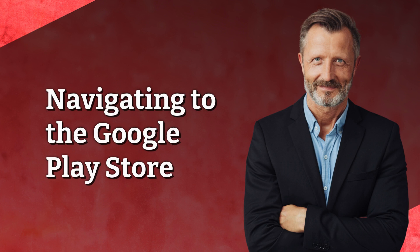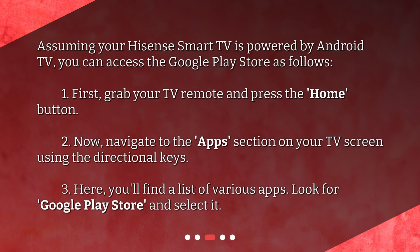Navigating to the Google Play Store. Assuming your Hisense Smart TV is powered by Android TV, you can access the Google Play Store as follows. First, grab your TV remote and press the Home button. Now, navigate to the Apps section on your TV screen using the directional keys. Here, you'll find a list of various apps. Look for Google Play Store and select it.